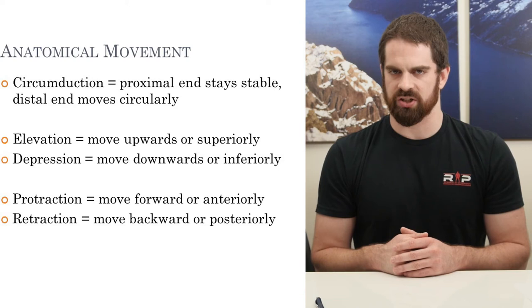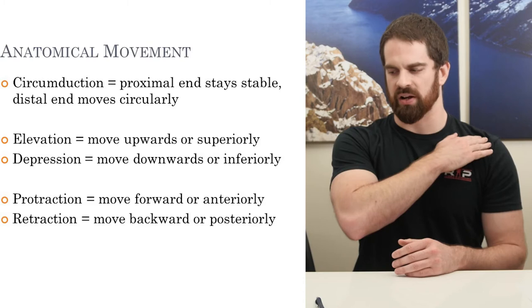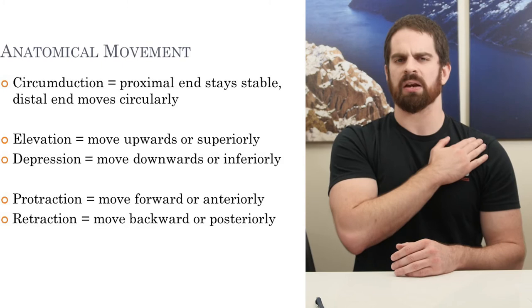Circumduction is where the proximal end of the joint stays relatively fixed while the distal end makes a circular motion. For example, my humerus stays relatively fixed in the shoulder joint while my hand freely moves in a circle. The same idea applies to the leg and hip. The proximal end stays fixed, the distal end makes a circle — circumduction.